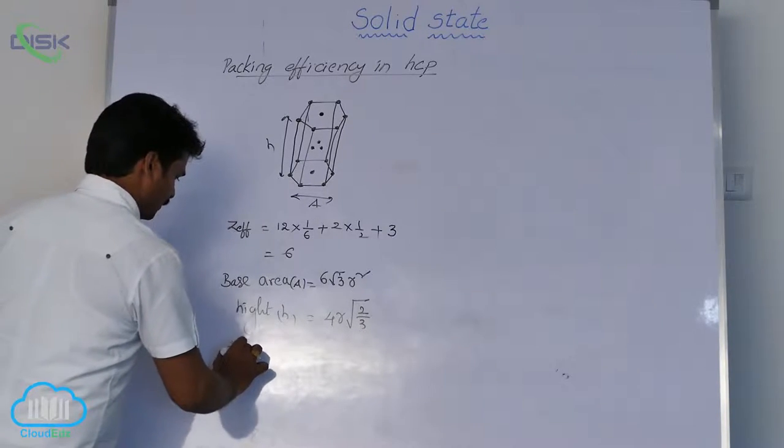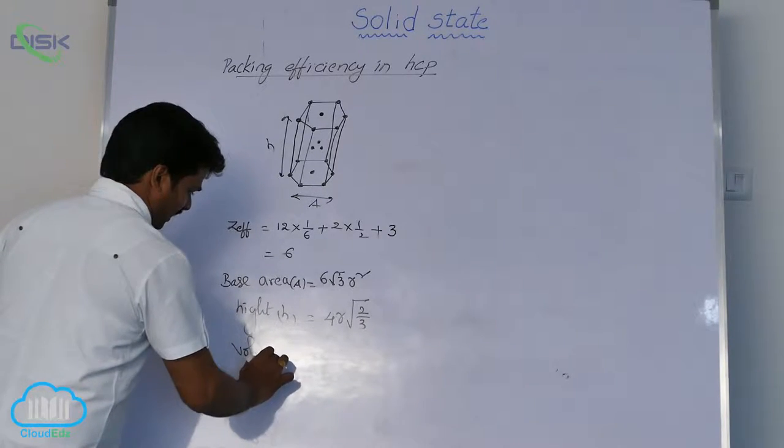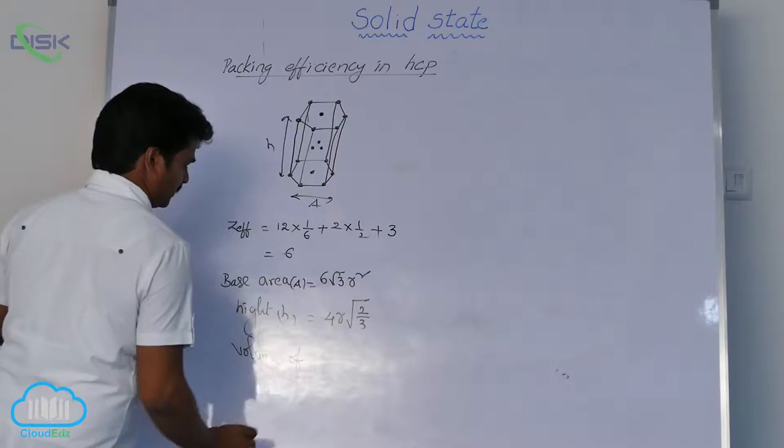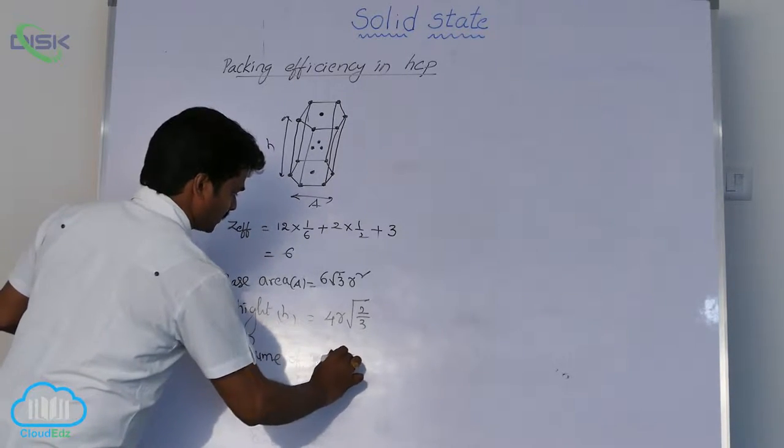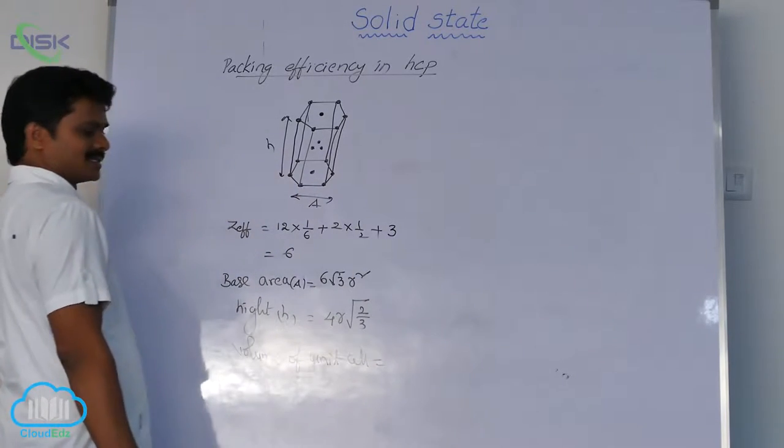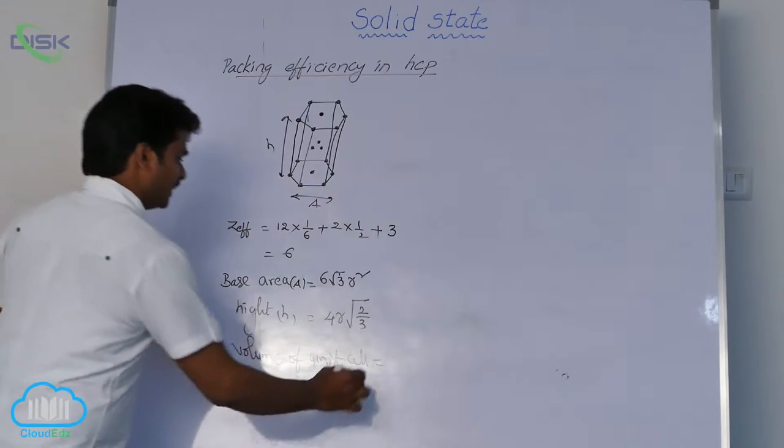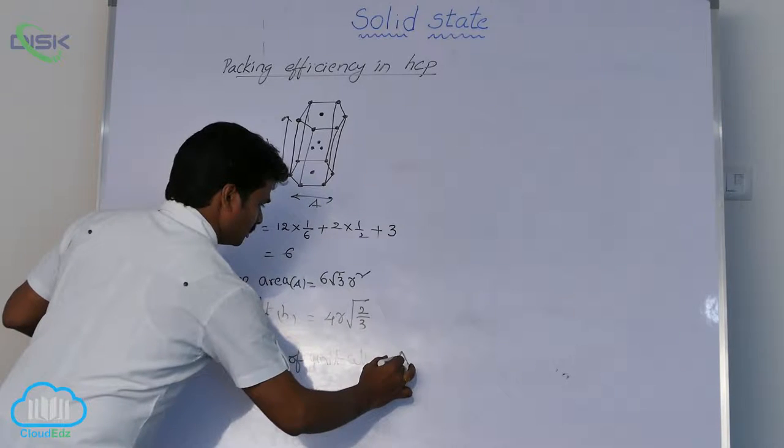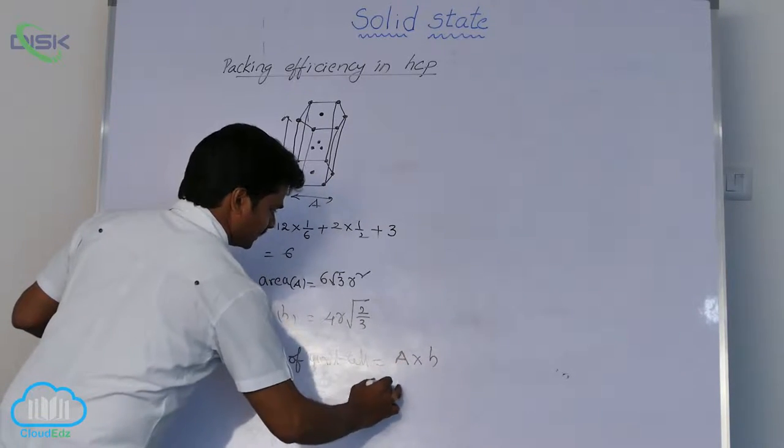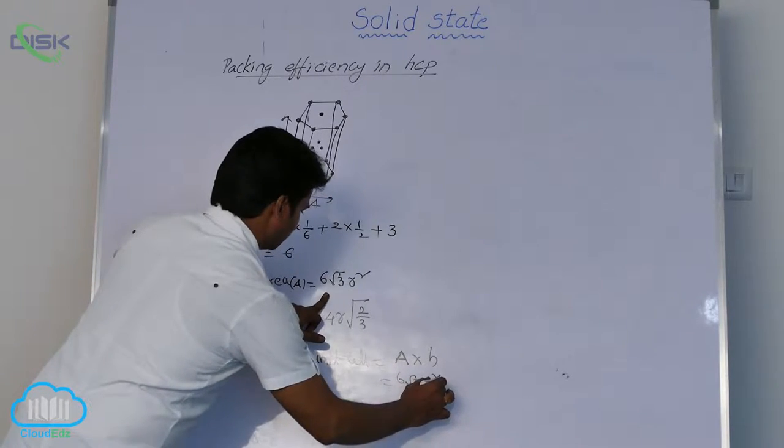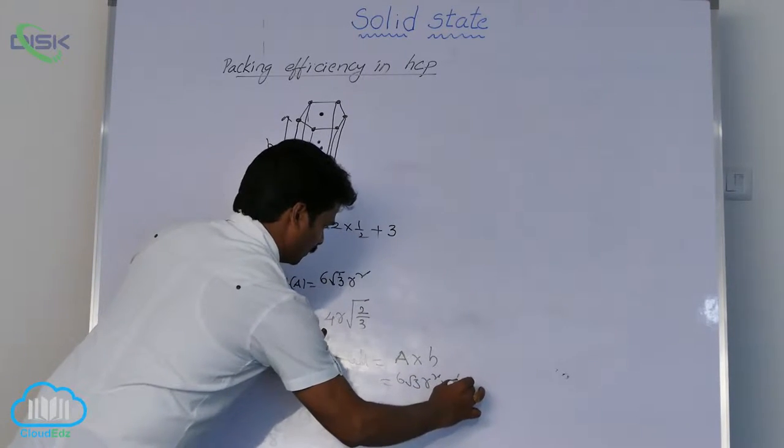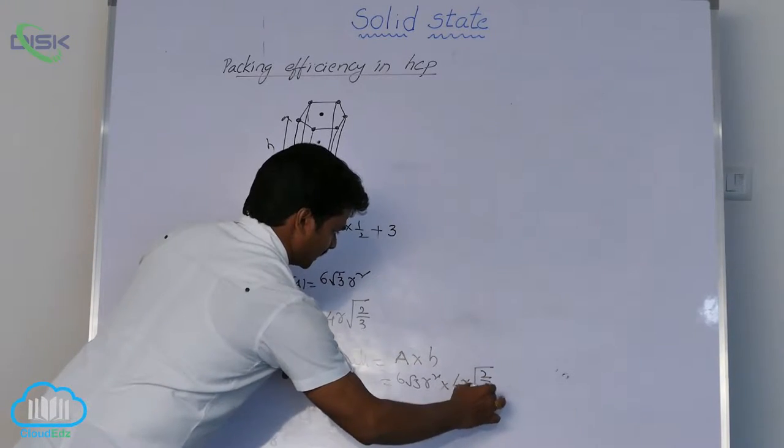So from that, volume of hexagon, how to calculate? Volume of crystal or unit cell. Volume of unit cell equals to base area into height. So base area 6 root 3 R square into height 4R under root 2 by 3.